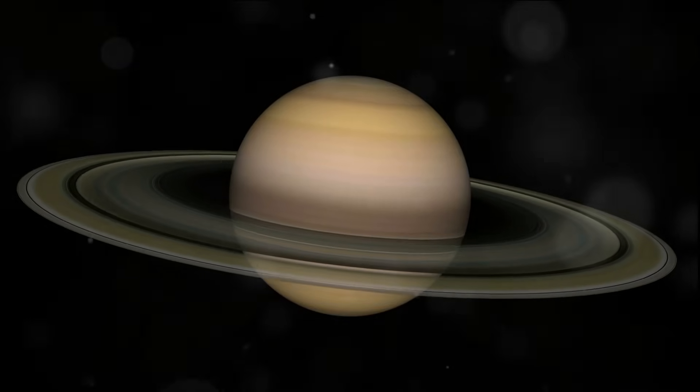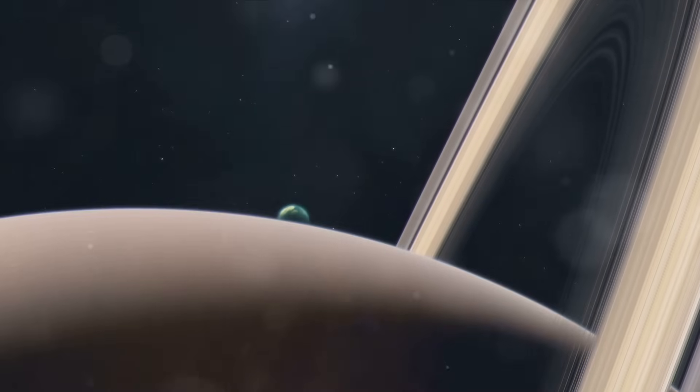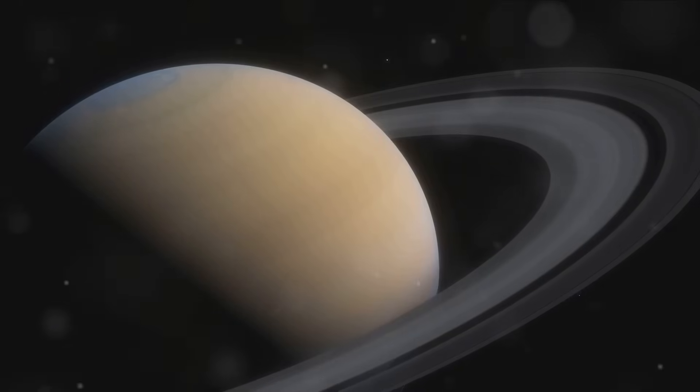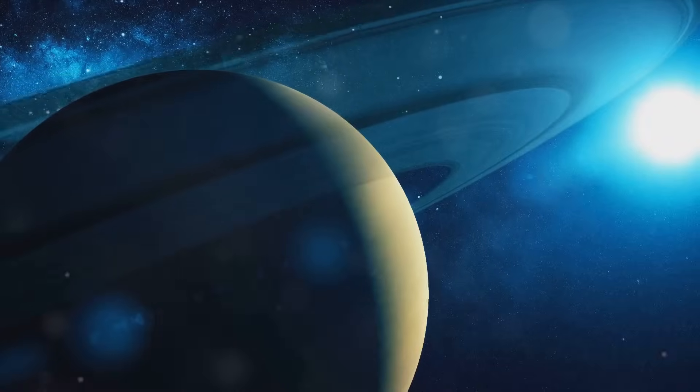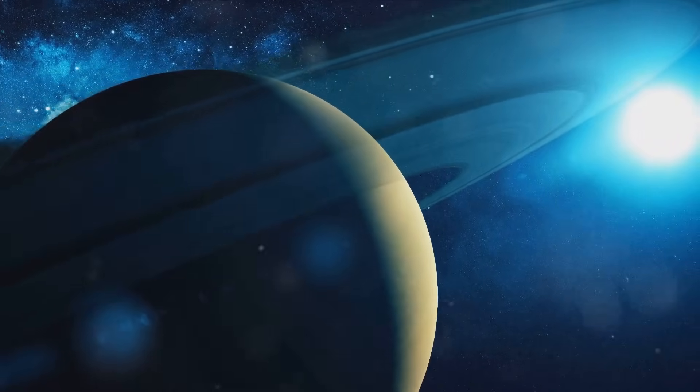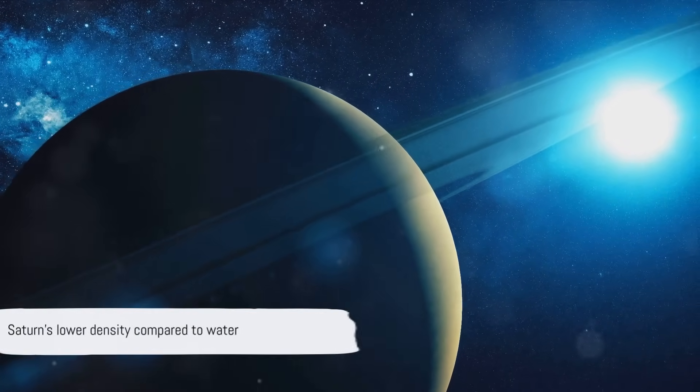Saturn, often referred to as the jewel of the solar system, is a gas giant like Jupiter. However, it's lighter, despite being nearly as large. It's mostly made up of hydrogen and helium with a core of rock and metal. This composition gives Saturn a lower density compared to all the other planets. Believe it or not, if you could find a bathtub big enough, Saturn would float.